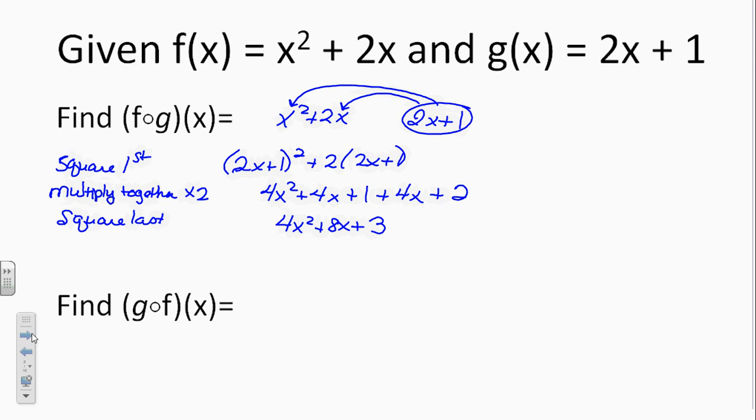Find G composed with F. So this one's a little simpler, right? We're just taking 2 times that X squared plus 2X, adding 1. Questions on this one? Feeling good?